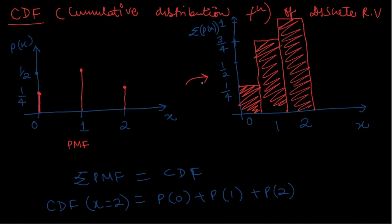For the cumulative probability distribution graph, the Y axis has values 1/4, 1/2, 3/4, and 1. CDF of 0 is the probability of X=0; CDF of 1 is probability of X=0 plus probability of X=1; CDF of 2 adds all three probabilities. So CDF takes everything to the left — remember this key concept for continuous random variables.